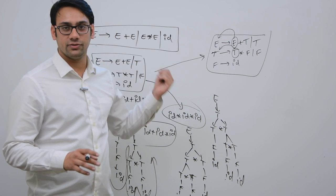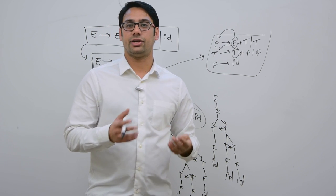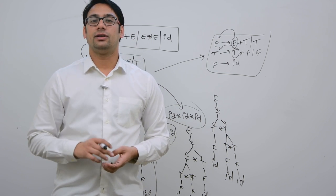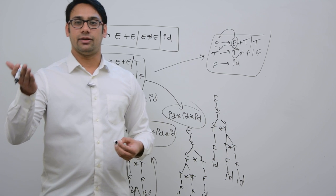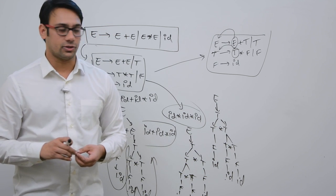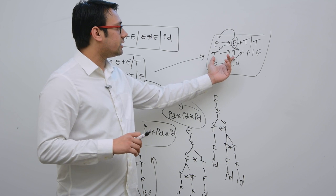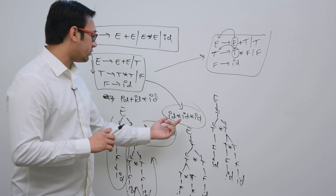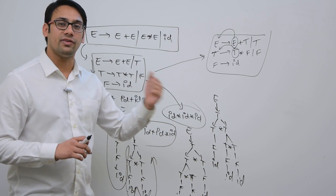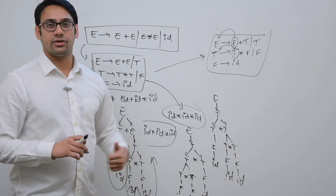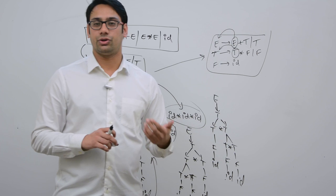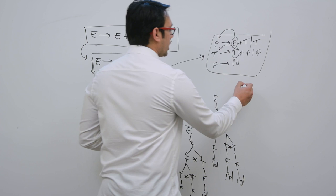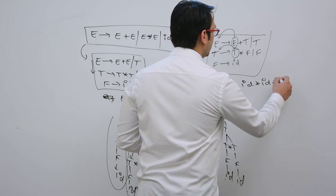When you make it left recursive, then it is left associative. When you make it right recursive, then it is right associative. For example, the power operation is right associative, and plus, minus, and multiplication operations are left associative. Here we made it left recursive, so the parse trees for any string will always be left linear. Because the tree is left linear, we are going to get left-to-right associativity. The string was ID multiplied by ID multiplied by ID.